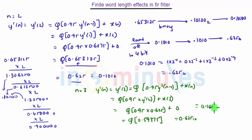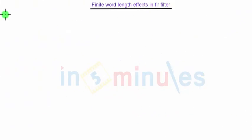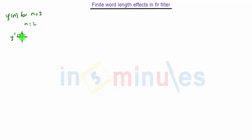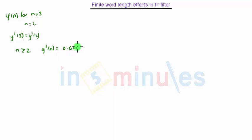This gives us 0.1010, which is rounded off again to 4 bits, and similarly we get the same result, that is 0.625. Comparing y'(n) for n equal to 3 and n equal to 2, they are the same: y'(3) equals y'(2). Hence for all values where n is greater than or equal to 2, the output y'(n) will remain 0.625.